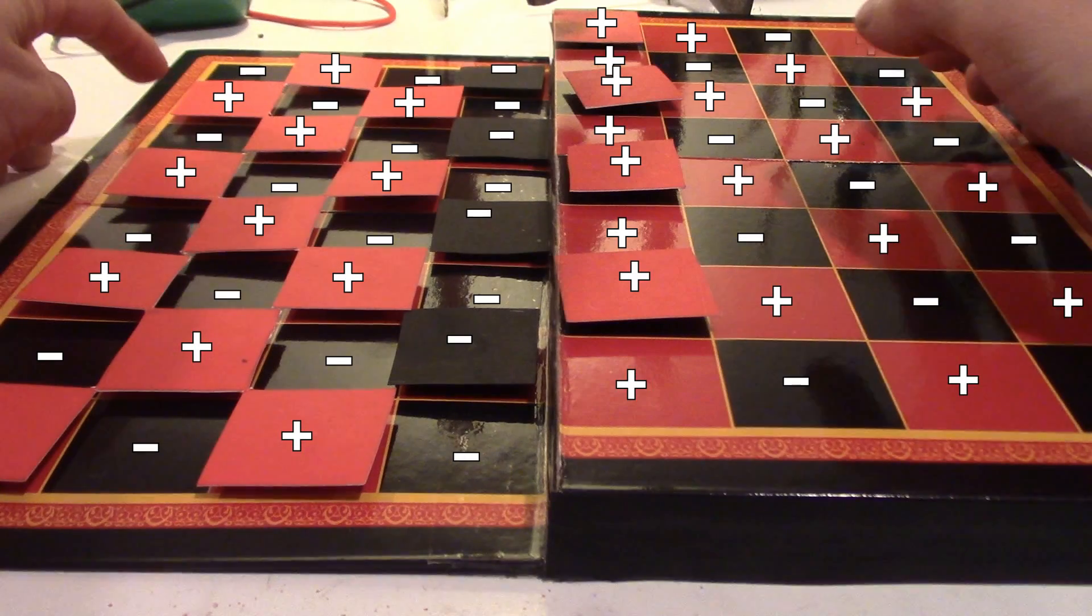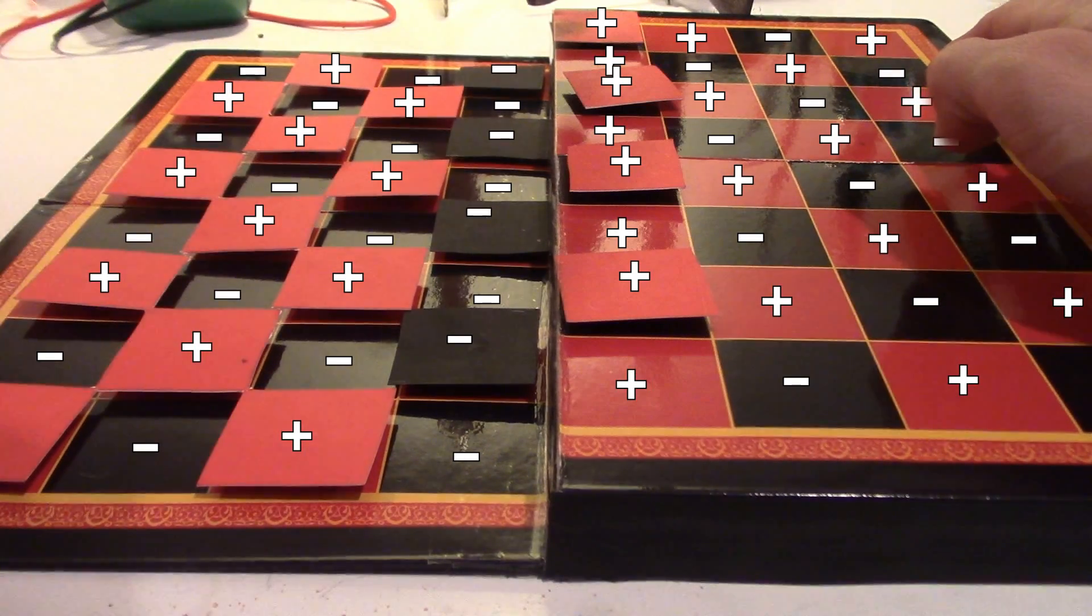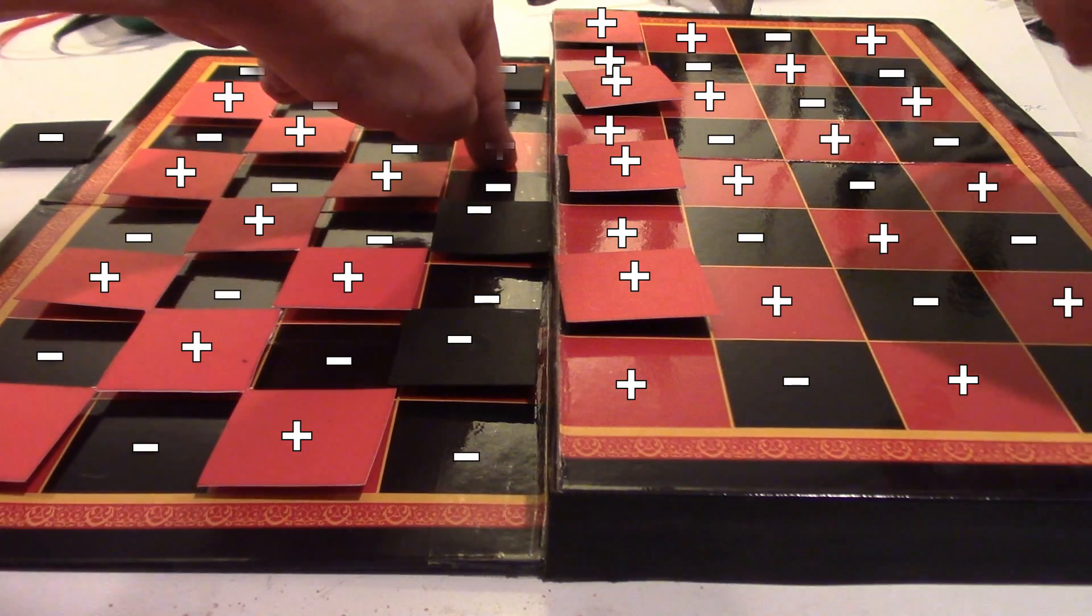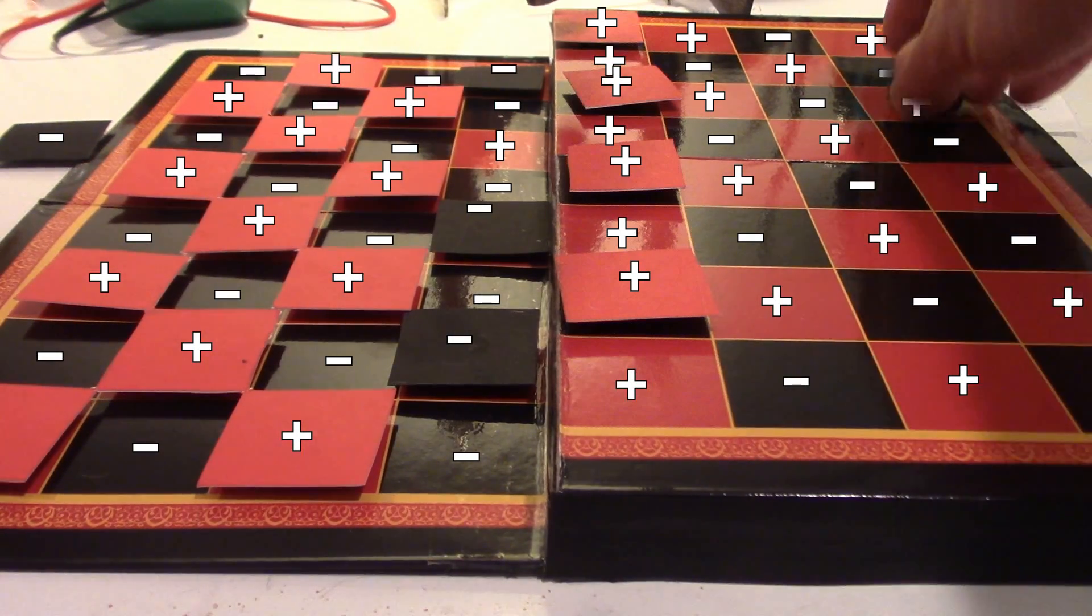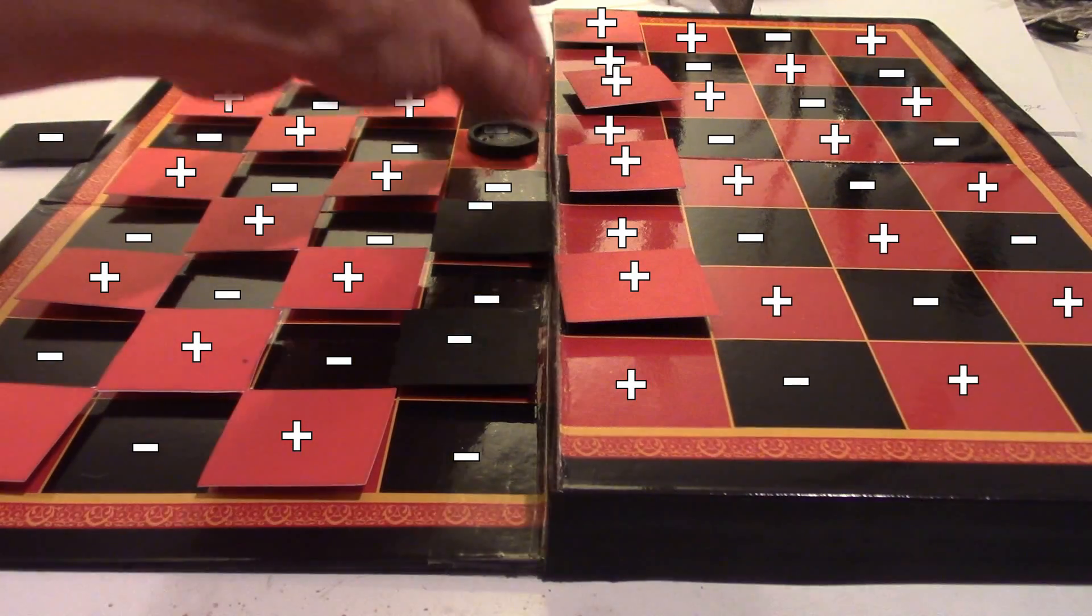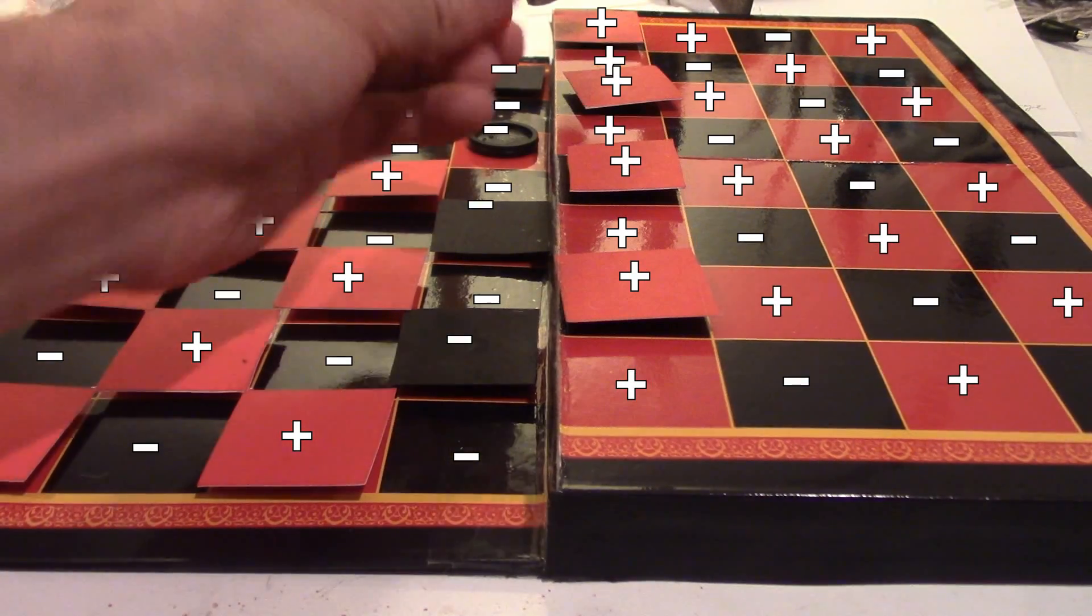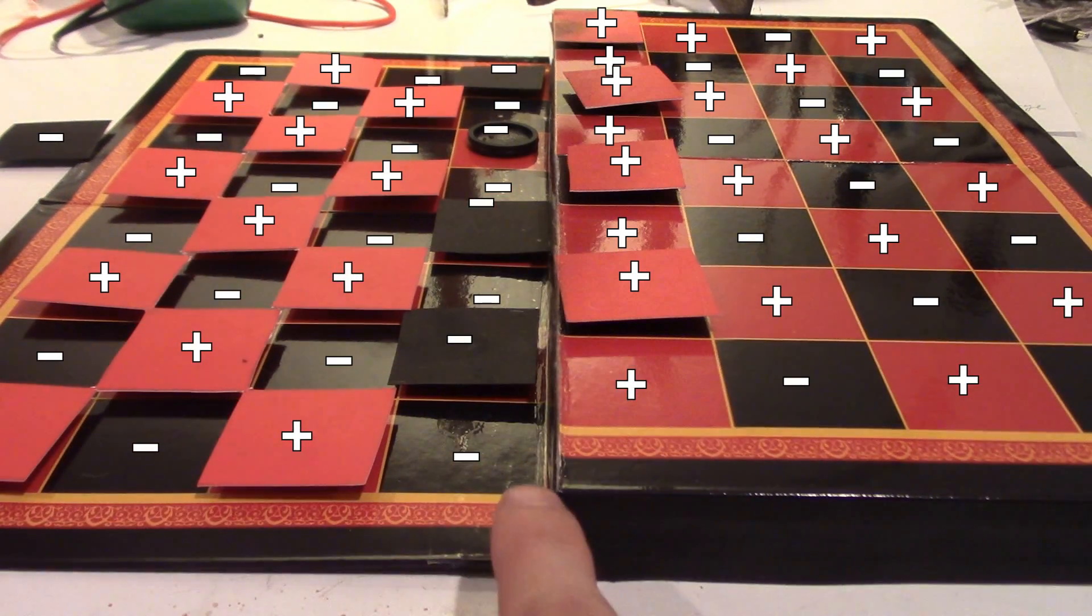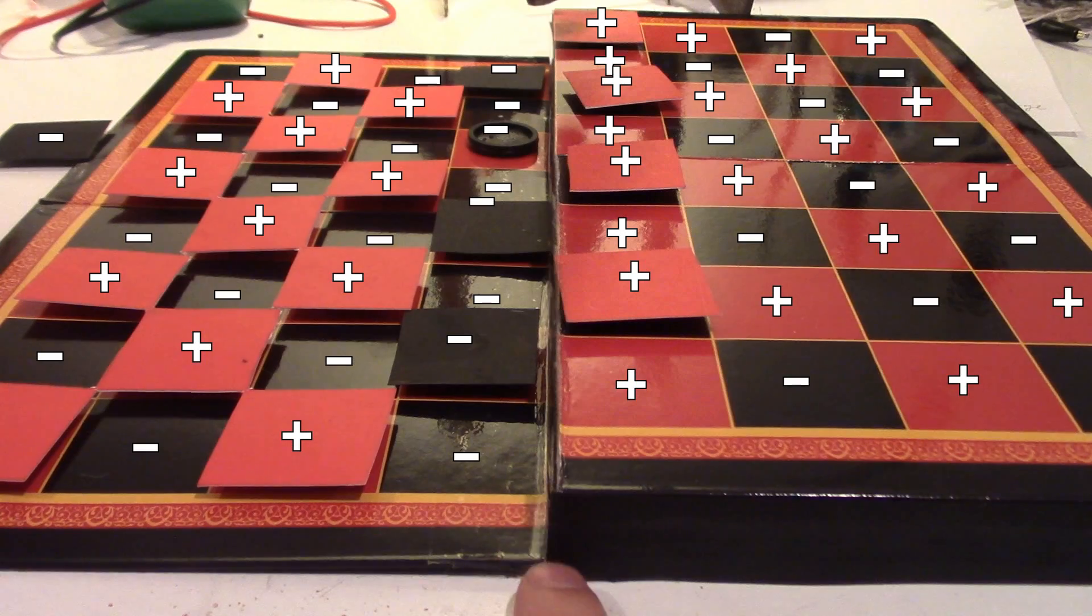Now under normal operation for an LED you pull electrons off of this side creating new holes over here for new drift electrons to fall into. Now when they fall off of that edge they release a certain amount of light energy and the amount of light energy corresponds to the potential energy drop.